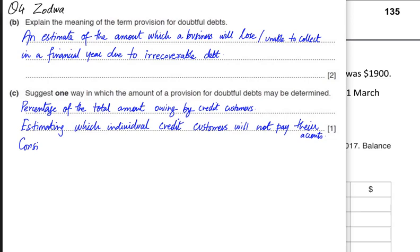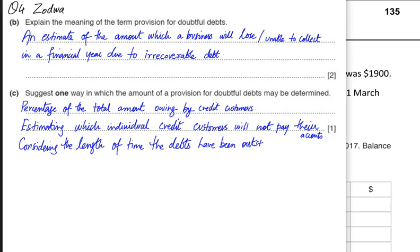For example, if Mr. A is not going to pay us, we apply provision for Mr. A. If Mr. B is about to pay us, we do not make provision for Mr. B. We apply provision customer-wise, considering the length of time the debts have been outstanding — applying different percentages to different aged debts. The provision keeps increasing as long as the customer is not paying, and the greater the length of time, the greater the percentage of doubtful debt.